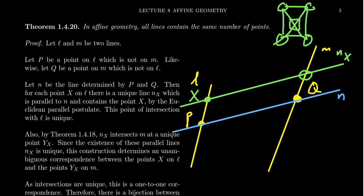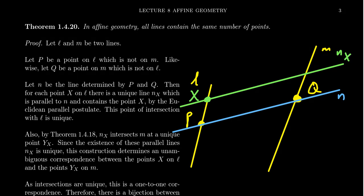Notice what we have: the lines n_X and n are parallel to each other, and n and M intersect each other. Then by Proclus Lemma, we have that n_X intersects M somewhere. We are going to call that point y_X. So there's a point of intersection, and since intersections are unique, there's only one point on n_X and on M, and we can unambiguously identify this point as y_X.